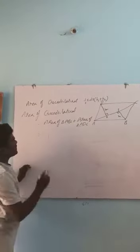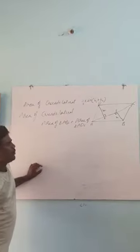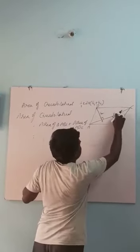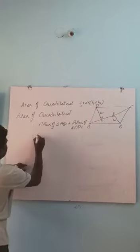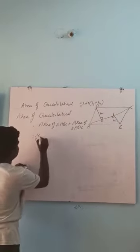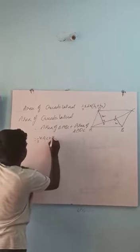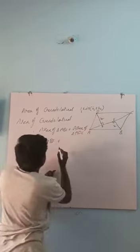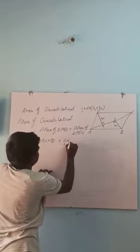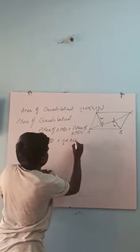Area of a triangle is half into base into height. In triangle ABC, AC is the base and BF is the height, so that is half into base AC into height BF. In triangle ADC, AC is the base and DE is the height. That is half into base AC into height DE.